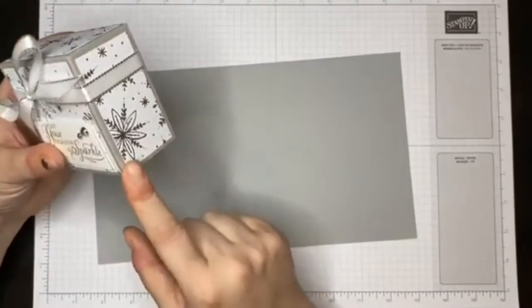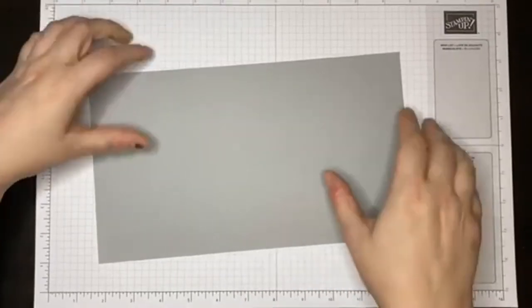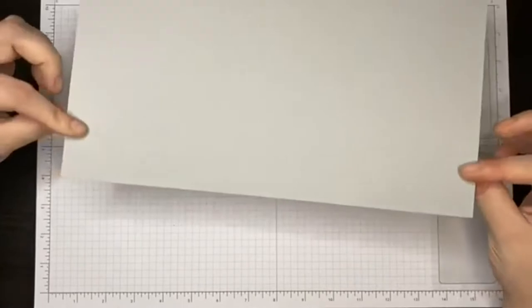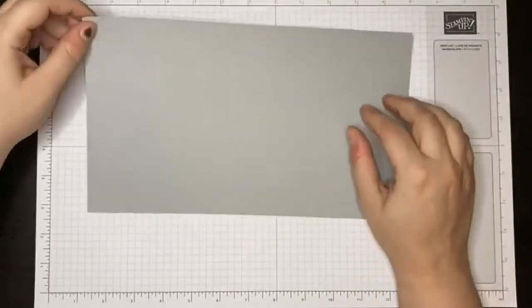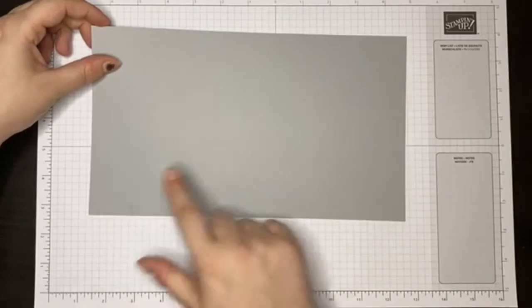Gray Granite came in the color refresh last year. If you didn't have Gray Granite, I've got Smoky Slate this evening, so we'll see how that goes. This piece of Smoky Slate is going to be six and a half inches by eleven and a quarter.